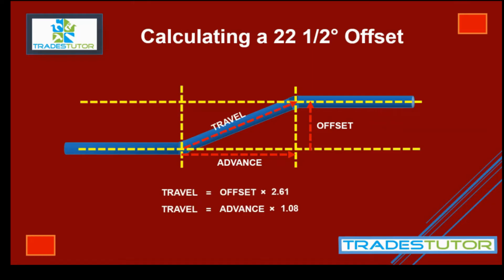So the first one deals with the offset. The offset, or let's say the travel, is 2.61 times bigger than the offset. Or the travel is the offset times 2.61.